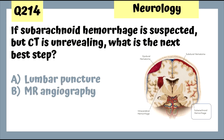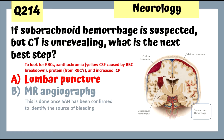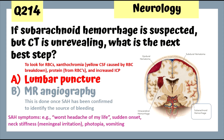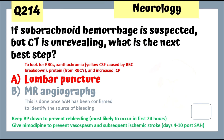Question 214: If subarachnoid hemorrhage is suspected but CT is unrevealing, the next step is lumbar puncture, which shows red blood cells, xanthochromia, elevated protein, and increased intracranial pressure. MR angiography is done once the condition has been confirmed to identify the source of bleeding. SAH symptoms include worst headache of my life, neck stiffness due to meningeal irritation, photophobia, and vomiting. Keep blood pressure down to prevent re-bleeding, which is most likely in the first 24 hours. Give nimodipine to prevent vasospasm and subsequent ischemic stroke, occurring from days 4 to 10 post-SAH.